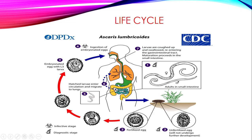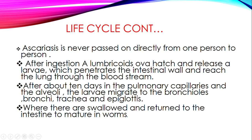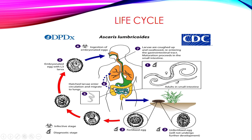Now let's look at the life cycle of Ascaris lumbricoides. In stage one, adult worms are living in the small intestine. These adult worms meet and produce eggs. The eggs are passed on in the feces or stool. These eggs are found in the soil — either directly in the soil or on vegetables grown in contaminated soil.